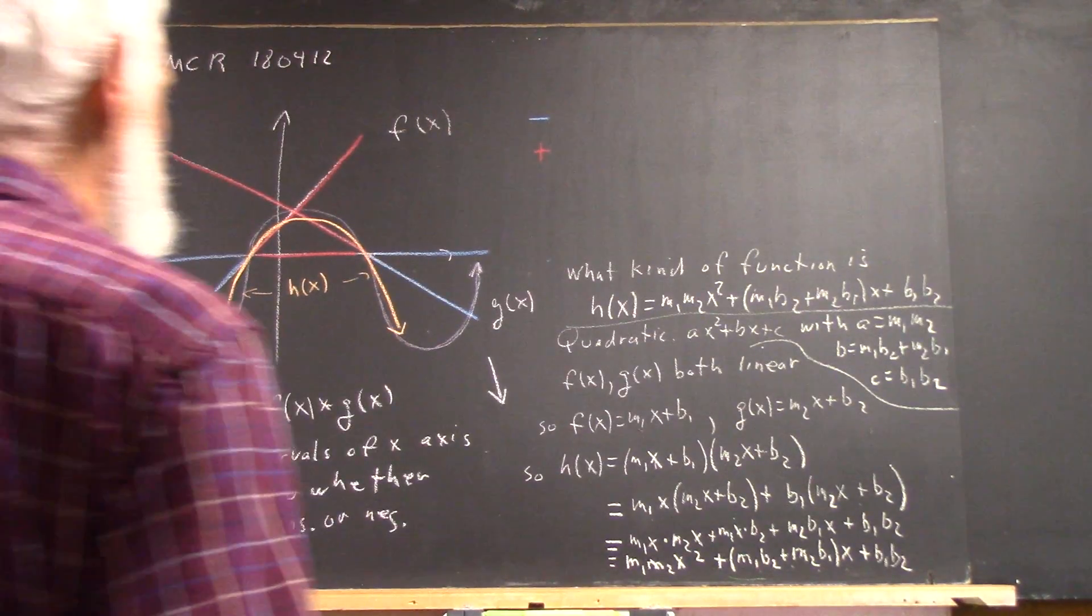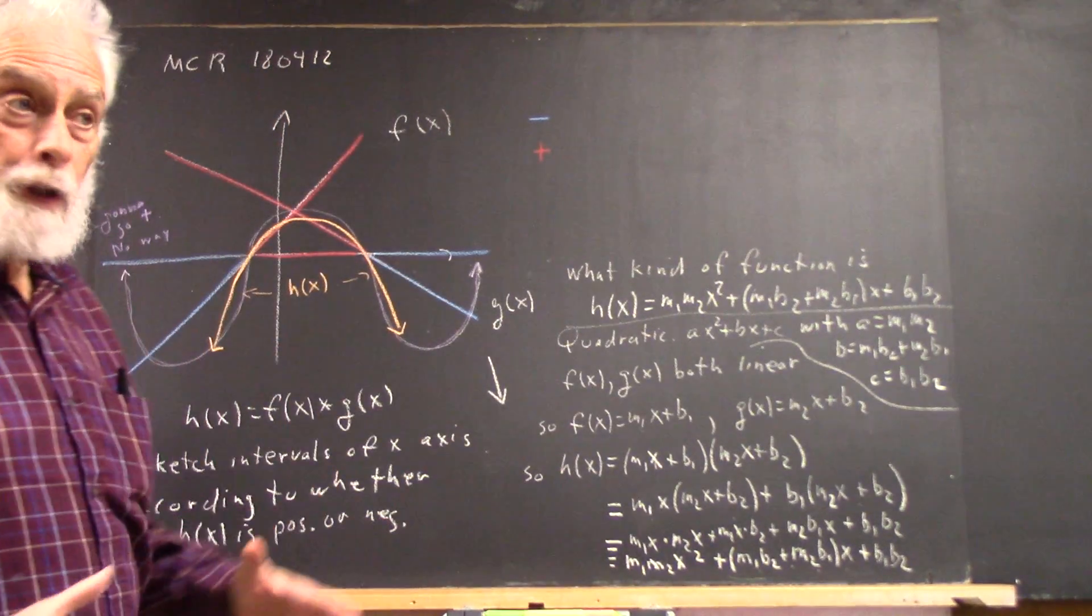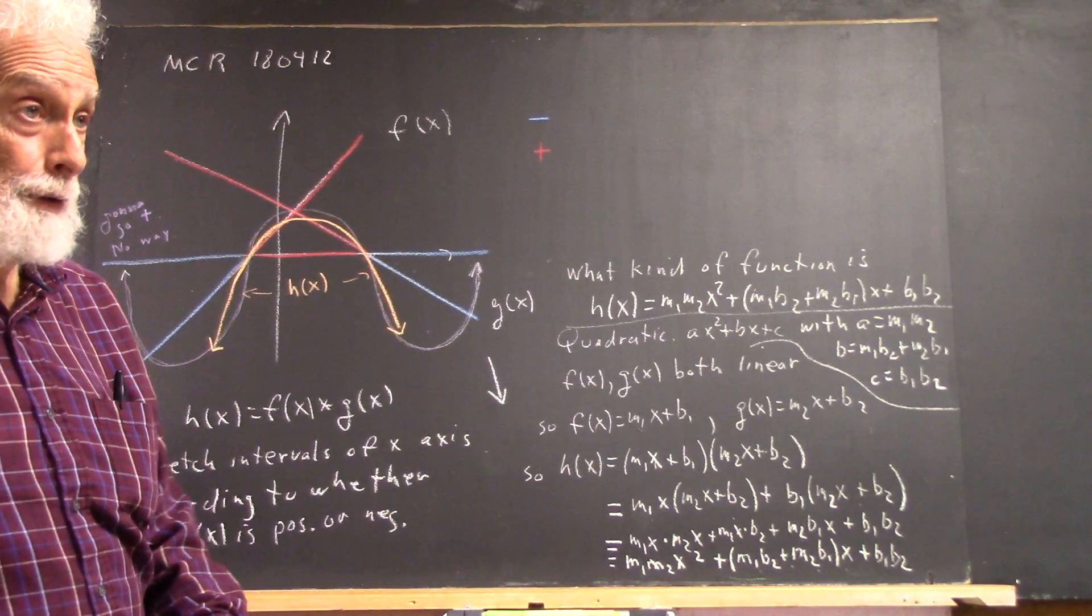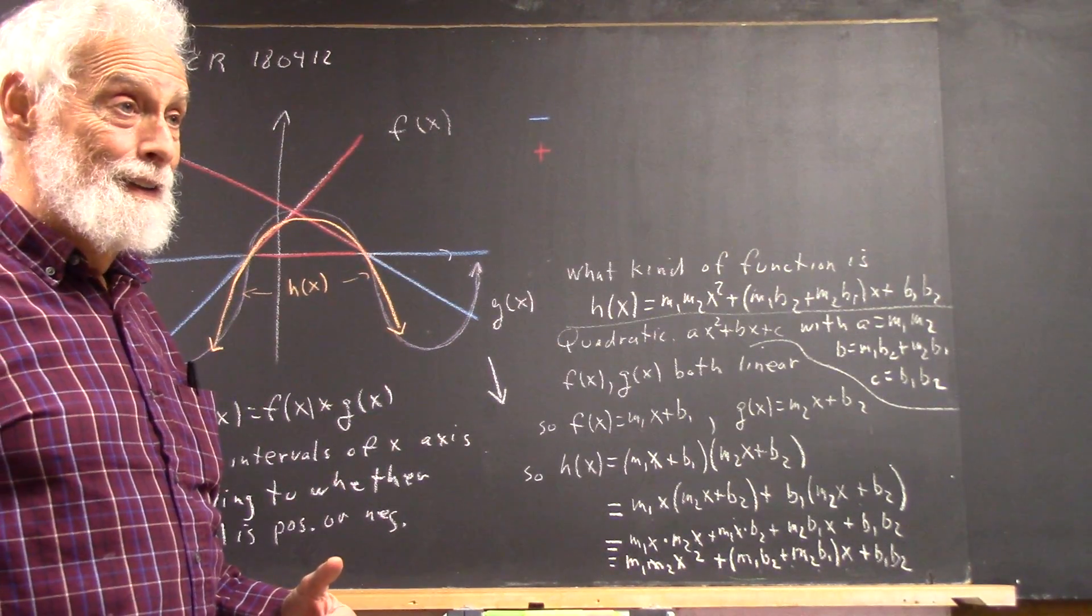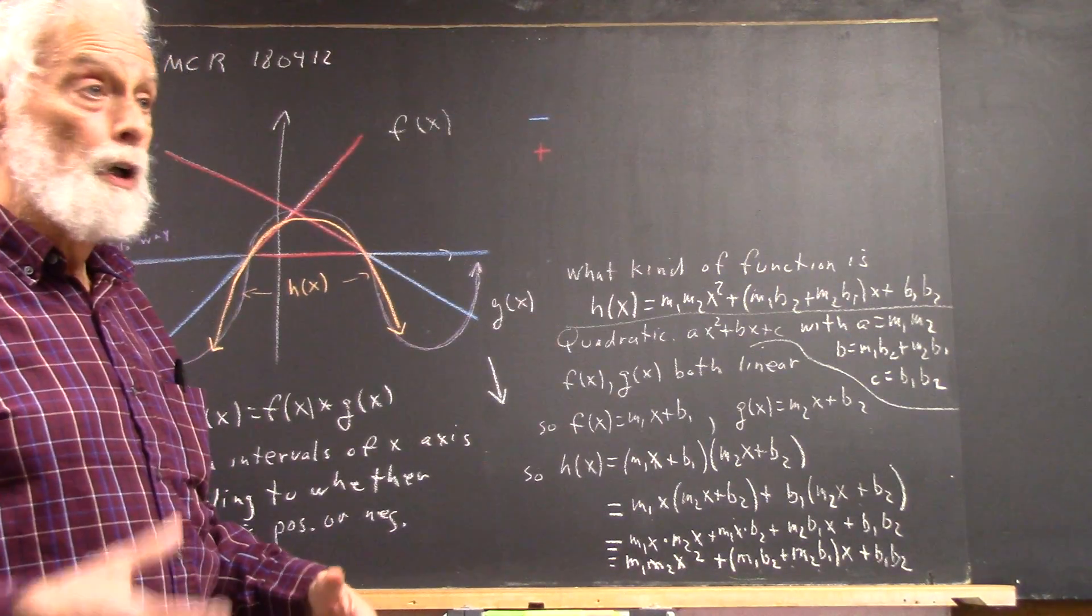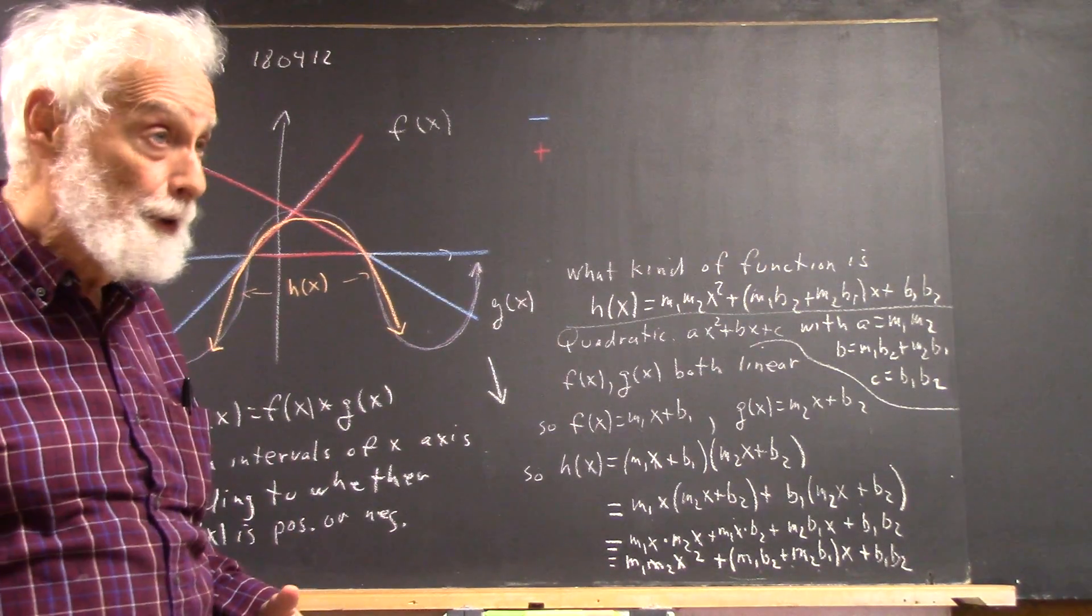Okay, so again, it's pretty straightforward, although there are some things to write out. If both of these functions are linear, then they're both a binomial, something times x plus something else, right?